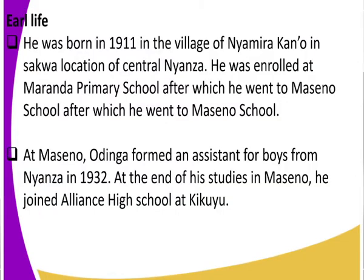Now, straight to his early life: Oginga Odinga was born in the year 1911 in the village of Nyamira Cano, in Sirol Location of Central Nyanza. Don't confuse this Nyamira with Nyamira County — we also have Nyamira in Central Nyanza. He was born in 1911 in the village of Nyamira.